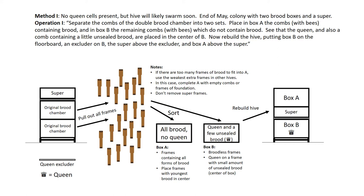At the end of the sorting, reassemble the hive. Going from bottom to top, there is the bottom board, then Box B, the queen excluder, the super, and Box A, followed by the covers.